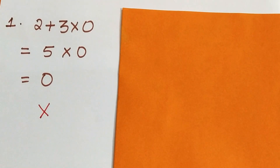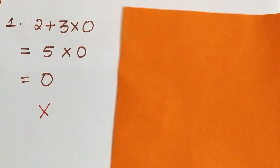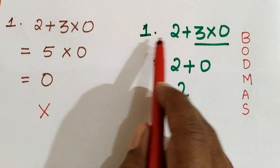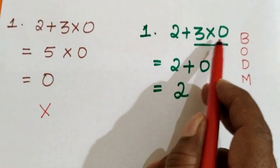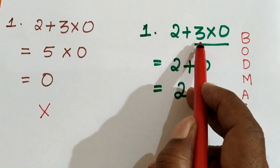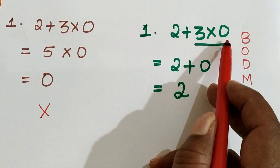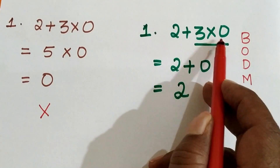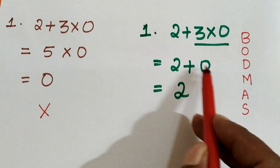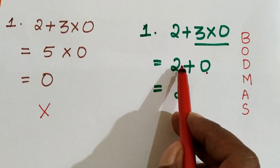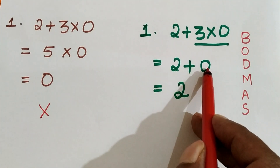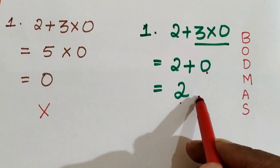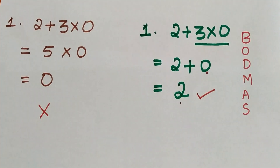We will see the correct procedure now. 2 plus 3 into 0. First, we have to multiply 3 into 0. 3 times 0 is 0. Then we have to add 2 with 0. 2 plus 0 is 2. This is the correct procedure.